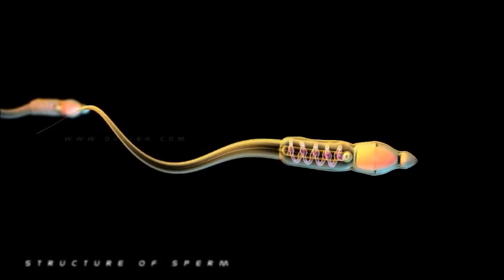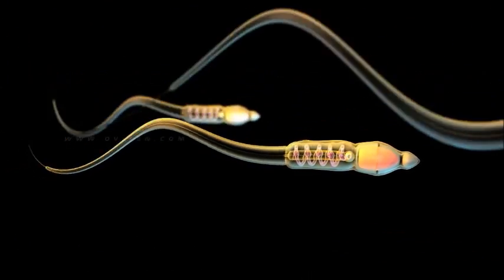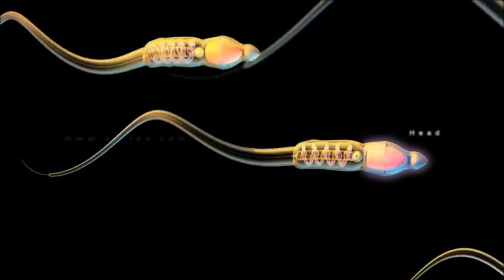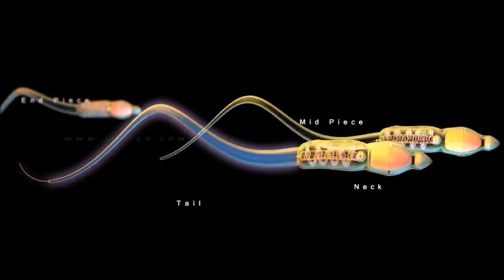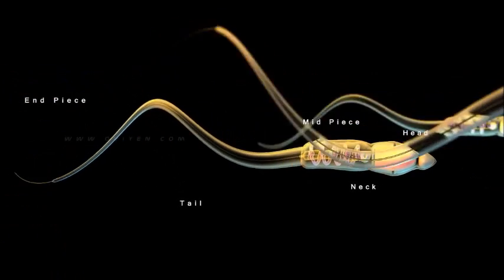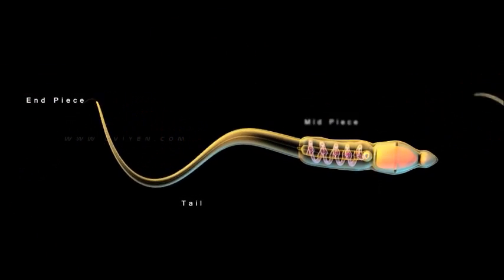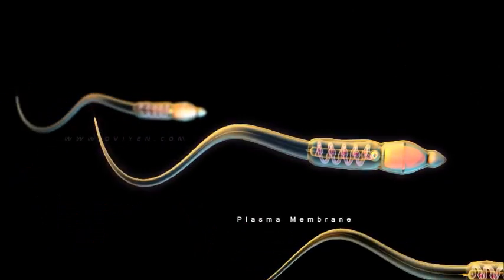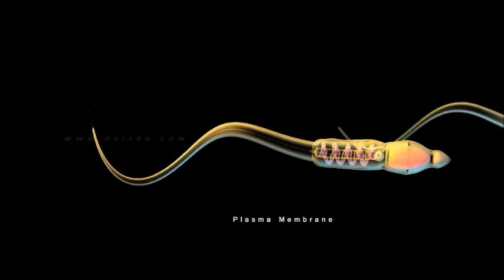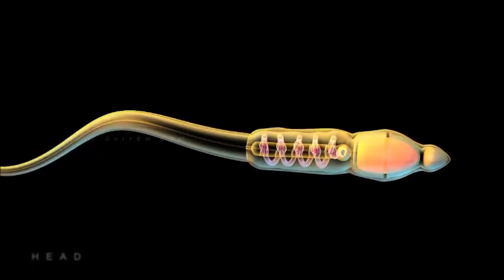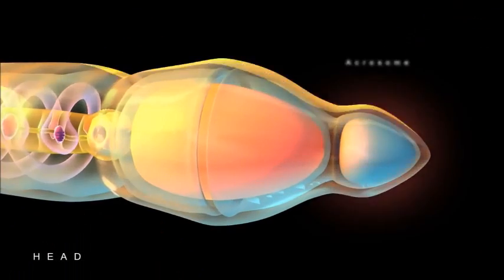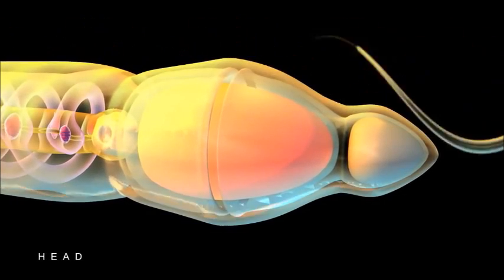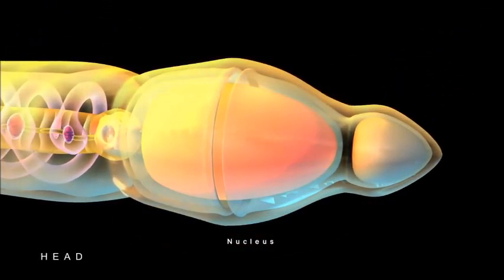The human sperm cell is approximately 60 microns long and is divided into 4 parts: the head, neck, midpiece, and tail. The head is oval shaped and has an enzyme-filled vesicle called an acrosomal region that covers about two thirds of the head. It contains the enzymes that help the sperm to penetrate the ovum. It also contains a large nucleus that carries the chromosomes.